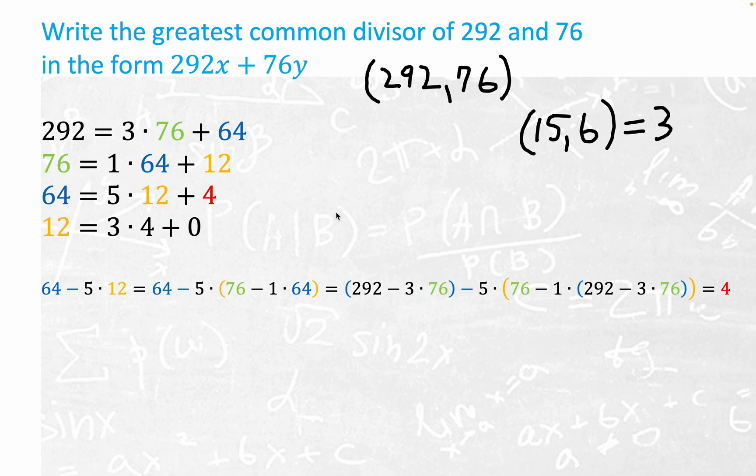Today we want to actually use something called the division algorithm to actually compute the greatest common divisor. I'm sure you've seen this. We start with the number 292, 76 is the divisor. Here's the quotient 3 and you get this remainder of 64. What happens right here, which is really kind of cool, we get this following very nice property.